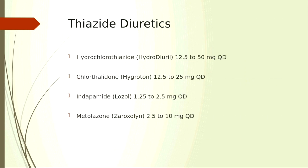Let's pull up thiazide diuretics. The four thiazide or thiazide-like diuretics available are hydrochlorothiazide, chlorthalidone, indapamide, and metolazone. I'll mention multiple times that I'm not a fan of hydrochlorothiazide — I'll explain why shortly. Metolazone is typically only used in patients on a loop diuretic for diuresis, like in heart failure, providing a synergistic diuretic effect. I've never personally seen metolazone used as a standard hypertension medication — it doesn't have great evidence for that, but it is technically a thiazide diuretic.